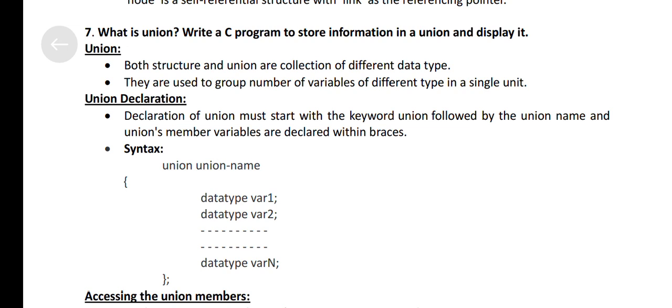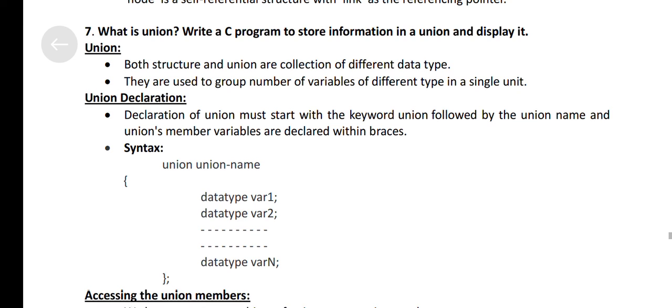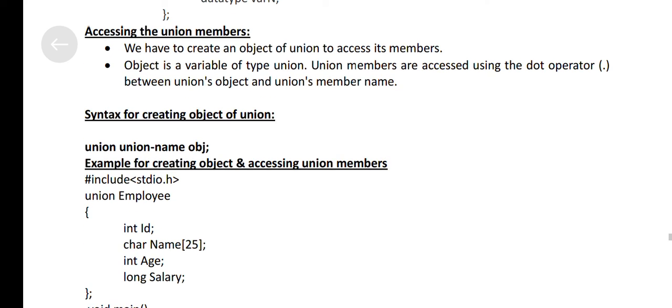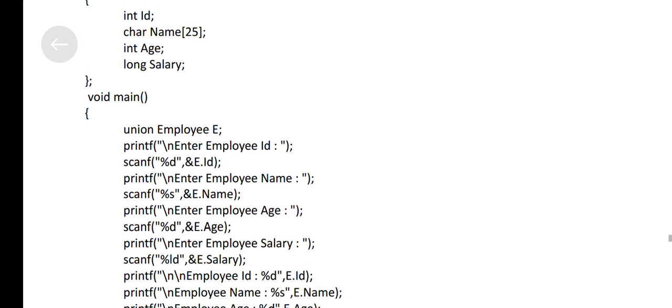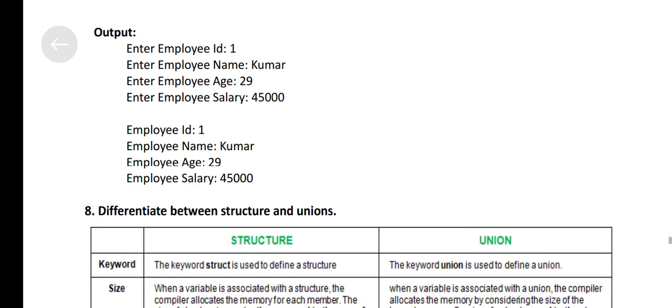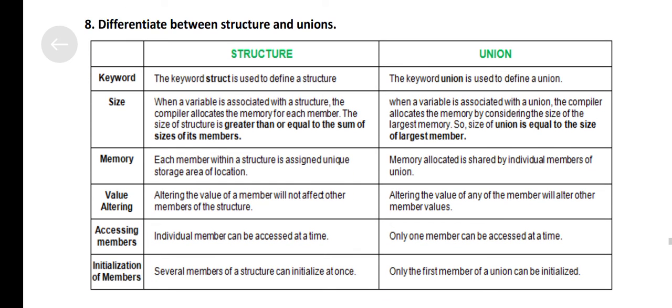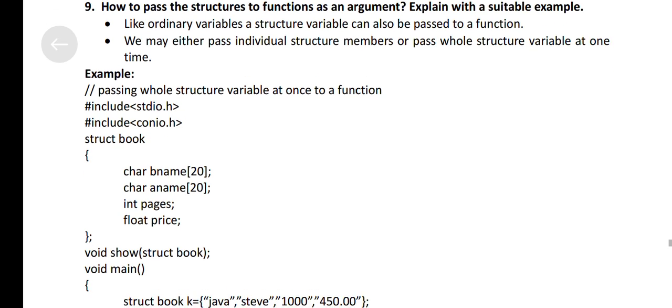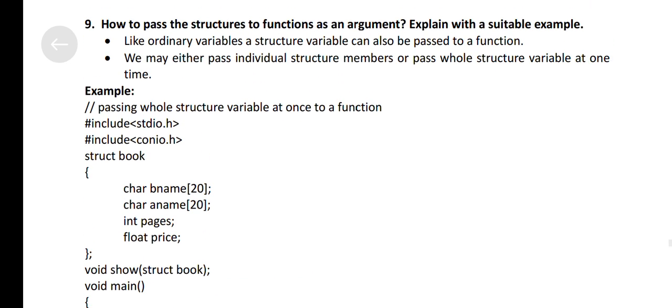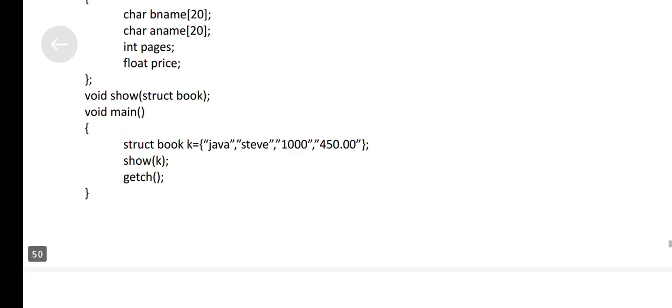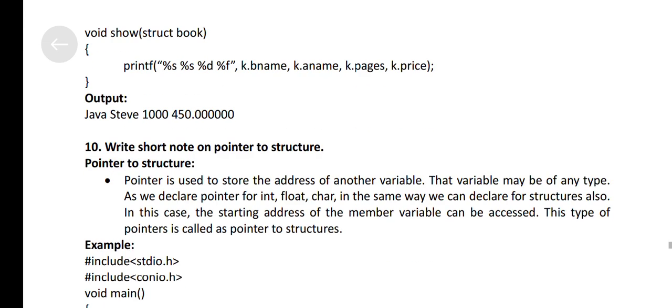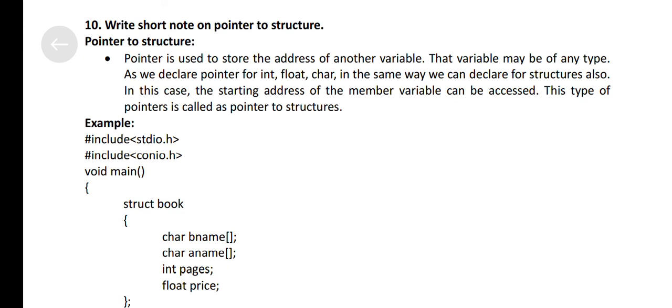What is union? Write a C program to store information in a union and display it. Differentiate between structure and unions. How to pass the structure to functions as an argument? Explain with a suitable example. Write short notes on pointer to structure.